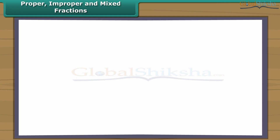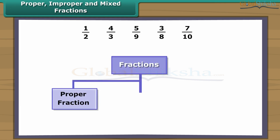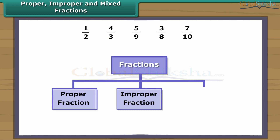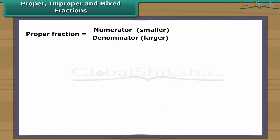Proper, improper, and mixed fractions. We know that a fraction is a number representing a part of a whole. Fractions are of three types: proper fraction, improper fraction, and mixed fraction. In a proper fraction, the numerator is less than the denominator.